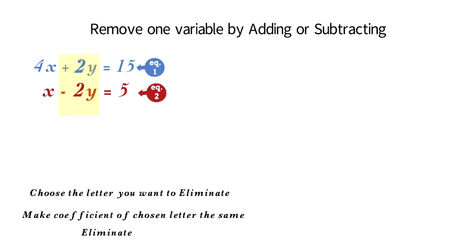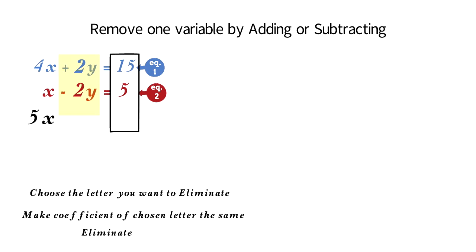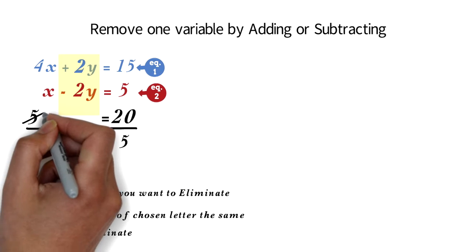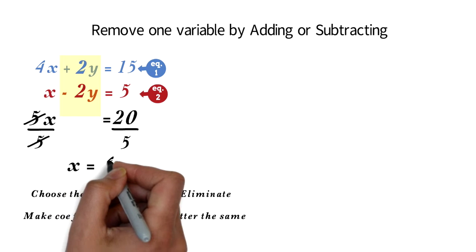The next step is to eliminate the y values. Since one is positive and the other is negative, we can add the two equations so that the y value will be 0. 4x plus x will be 5x. 2y plus negative 2y will be 0. And 15 plus 5 will be 20. Now we can solve this one-step equation: 5x equals 20. The 5 is multiplying, so we divide both sides by 5. The 5 cancels out. 20 divided by 5 is 4. Therefore, x equals 4.